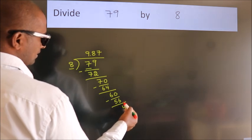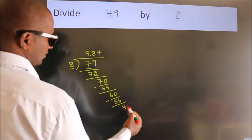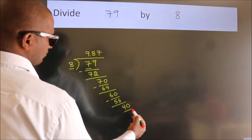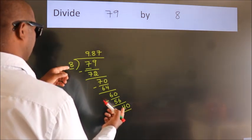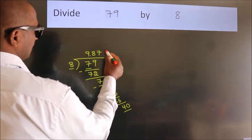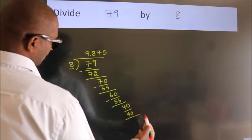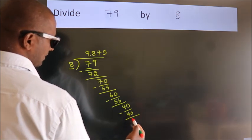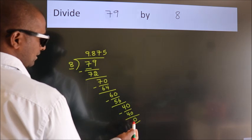After this, we already have the decimal, so directly take 0. So 40. When do we get 40? In the 8 table, 8 fives is 40. Now we subtract and get 0. Here we got remainder 0.